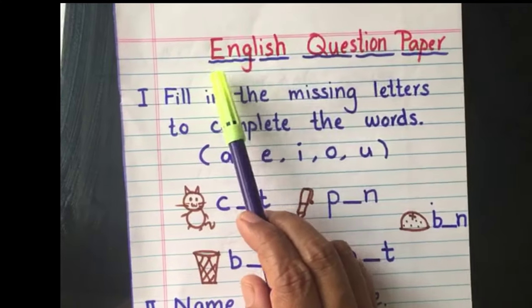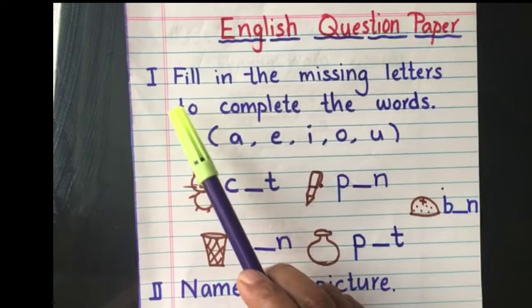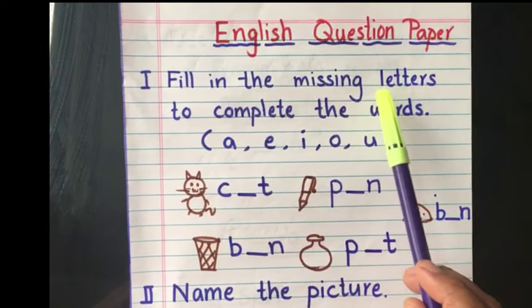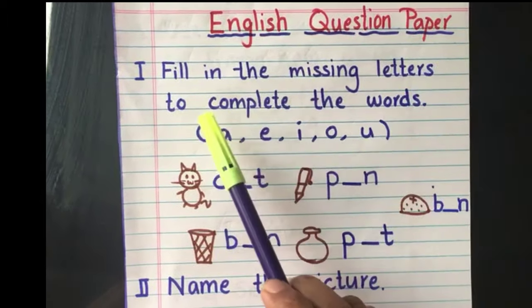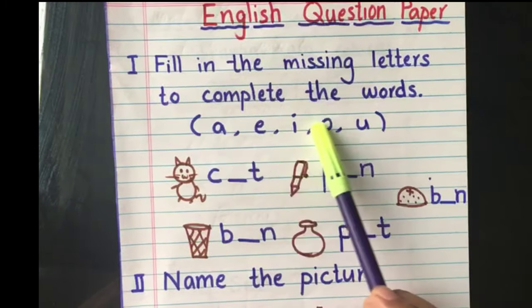I didn't mention about the mark. It's up to you. The first question is, fill in the missing letters to complete the words. Based on the UKG syllabus, consonant and vowels, A, E, I, O, U.